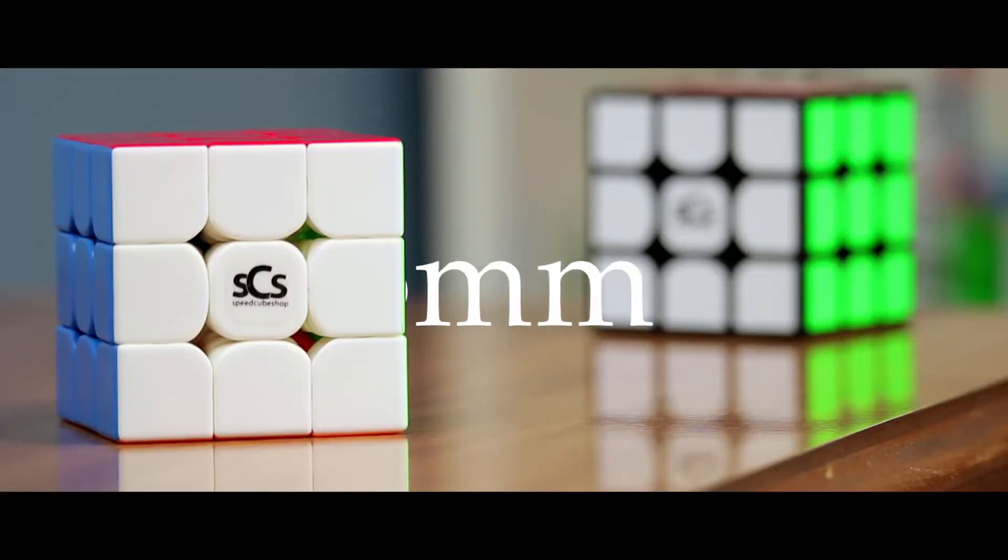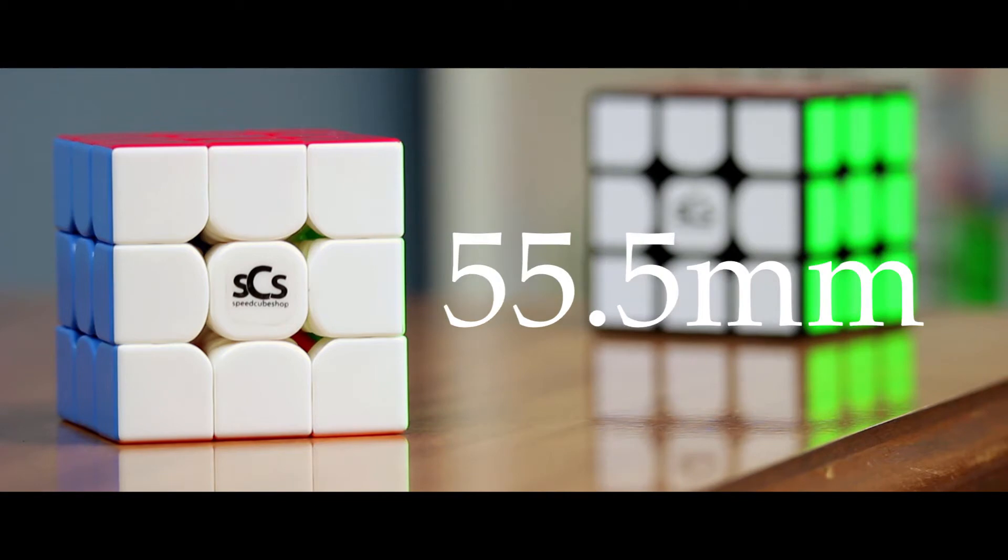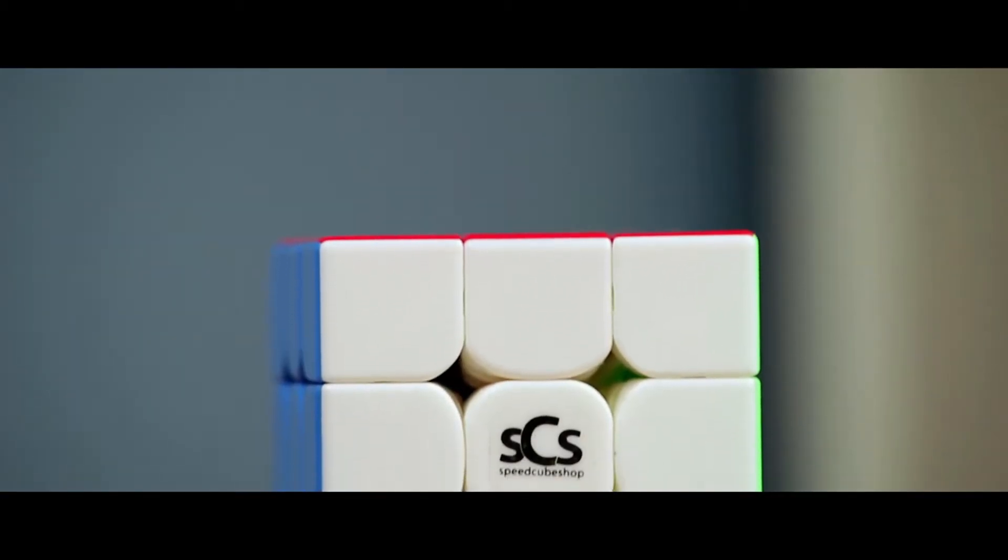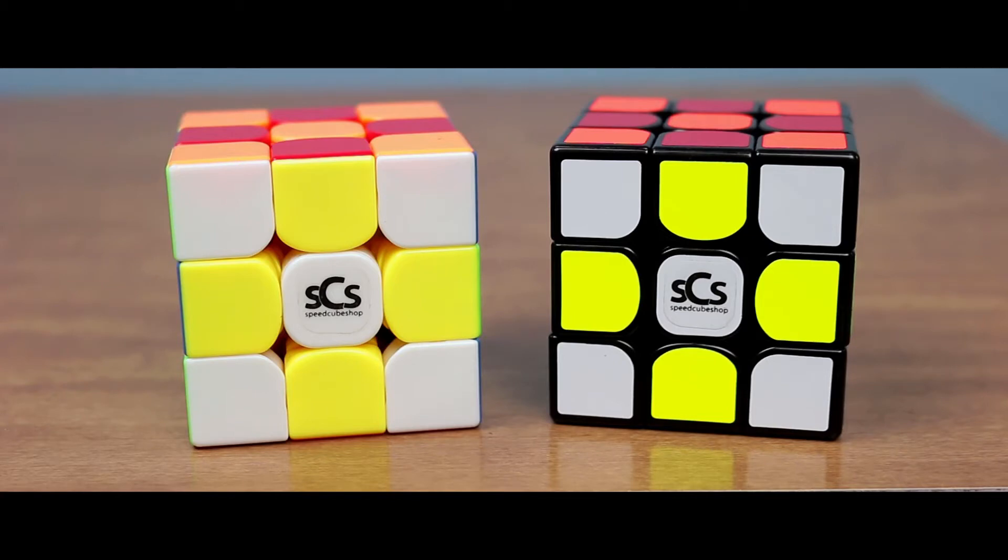The Yuexiao Pro-M is a 55.5mm 3x3, making it half a millimeter smaller than the original. Interestingly, the non-magnetic Pro is 56mm. I haven't actually used the regular Pro, so I'm honestly not sure if that is the case, but both the cube stores I checked said those measurements. The magnetic versions that you see here weigh 3.2 ounces, with the non-magnetic version of this puzzle weighing 2.9 ounces.